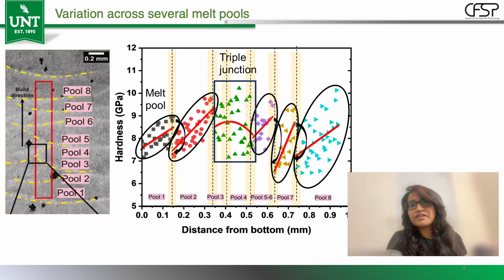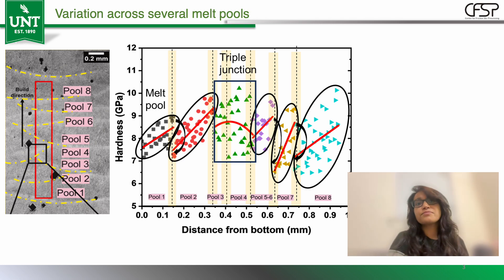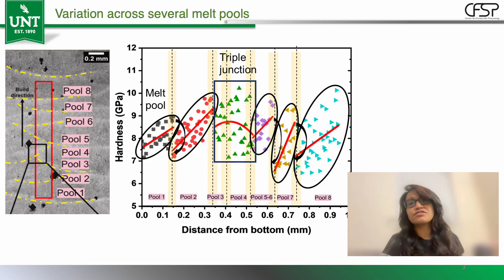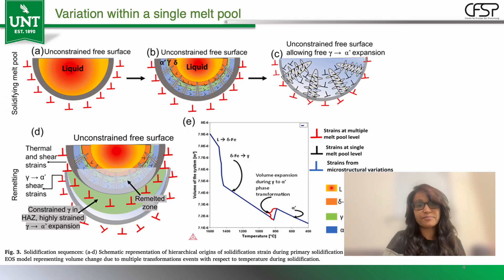So what did we discover? At the melt pool level, we found periodic variation in hardness — it increases from bottom to top of the pool and drops again at the boundary of the next melt pool. This periodicity mirrors the solidification strain pattern. The bottom of the melt pool is relaxed, while the top, which solidifies last, shows the maximum deformation because of the phase transformation from austenite to martensite.